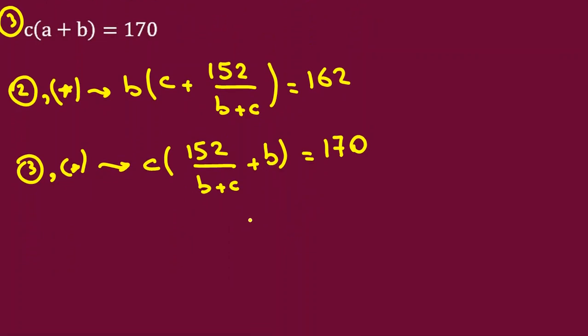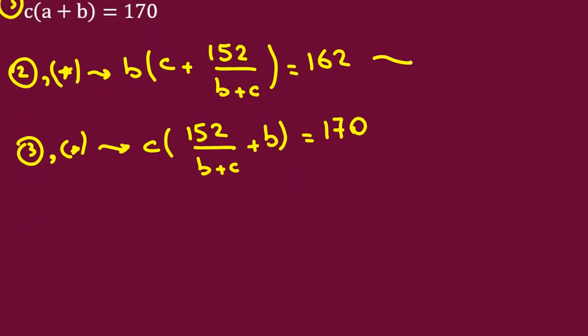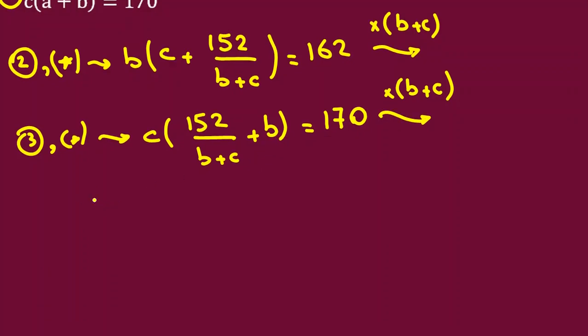Now let's see how we can simplify it more. We should do what to get rid of this denominator, multiply by b+c. What about second one here? Again we have b+c in denominator, so we should multiply by b+c. So the first equation, it will be bc(b+c), and second one b times this b+c will be cancelled, it will be 152b, equal to 162 times b+c. So the first equation is this now.